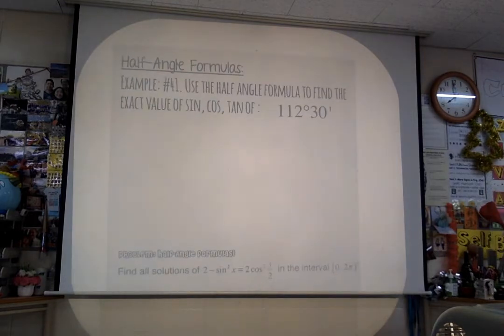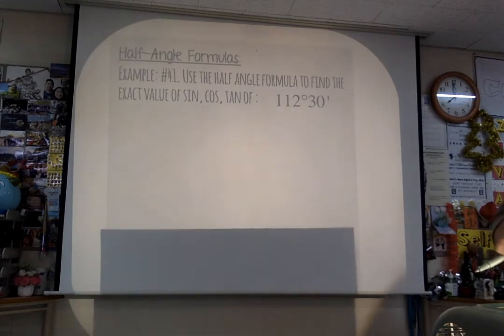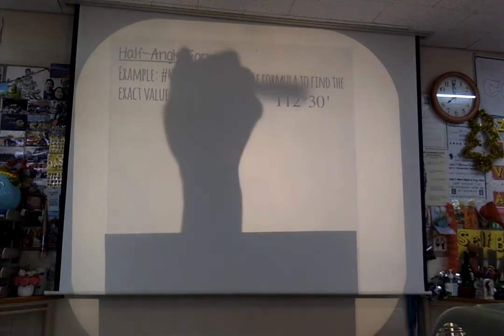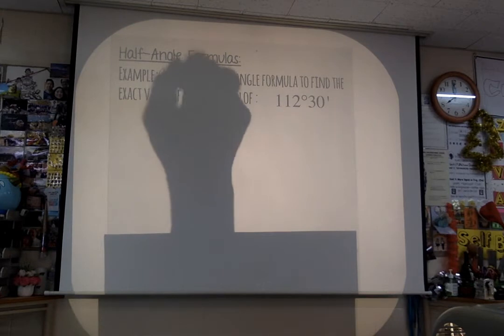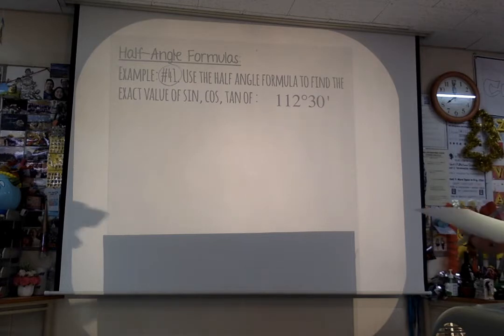Now we did power reducing. Now let's try some half-angle formulas — they're pretty useful too. This is number 41 from your textbook: use the half-angle formula to find the exact values of sine, cosine, and tangent of 112 degrees and 30 minutes.